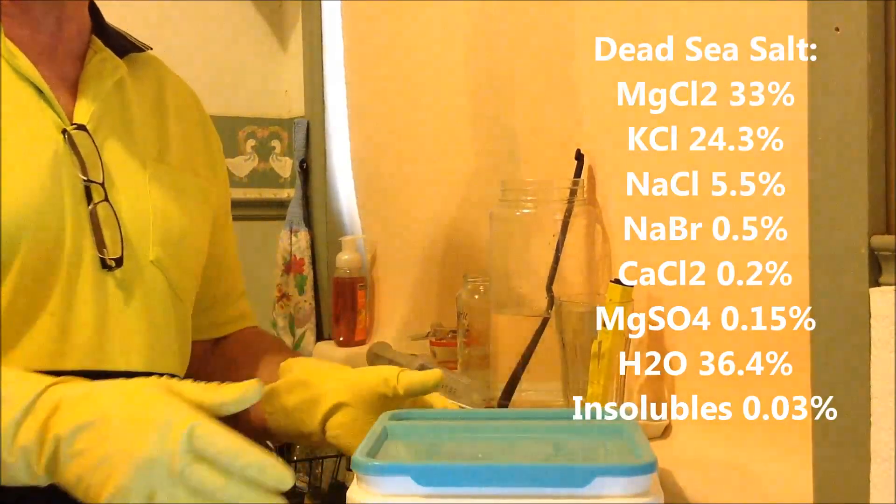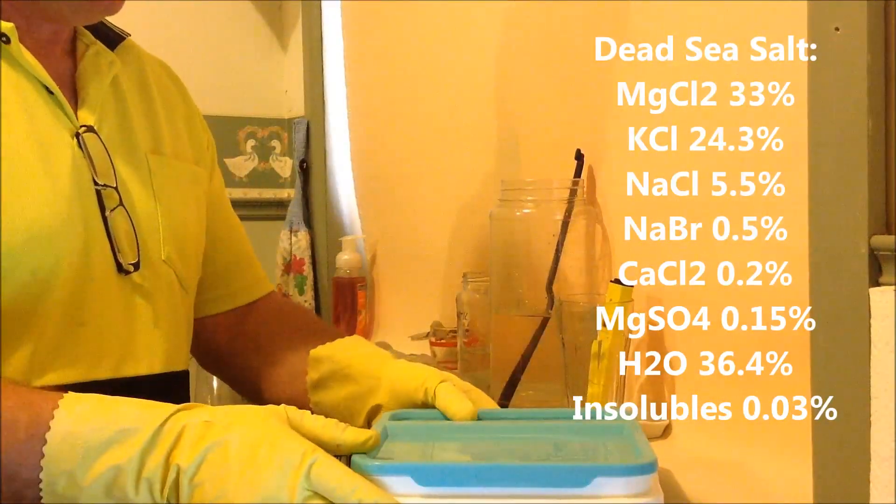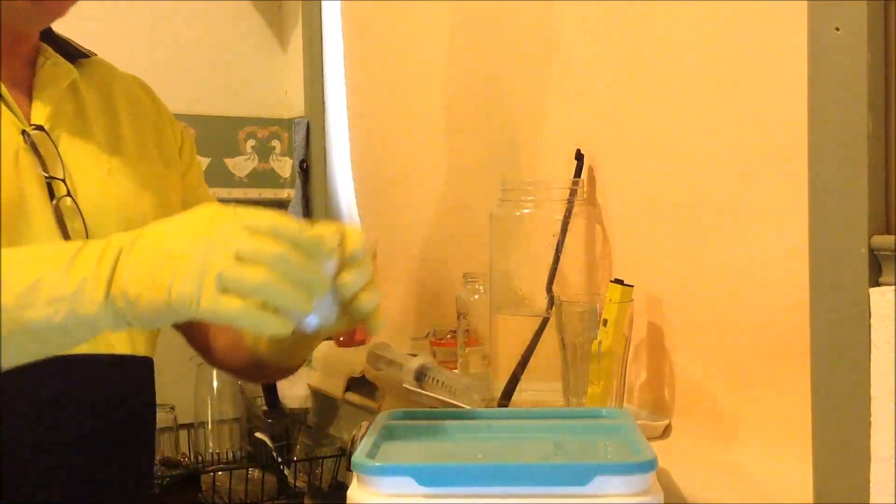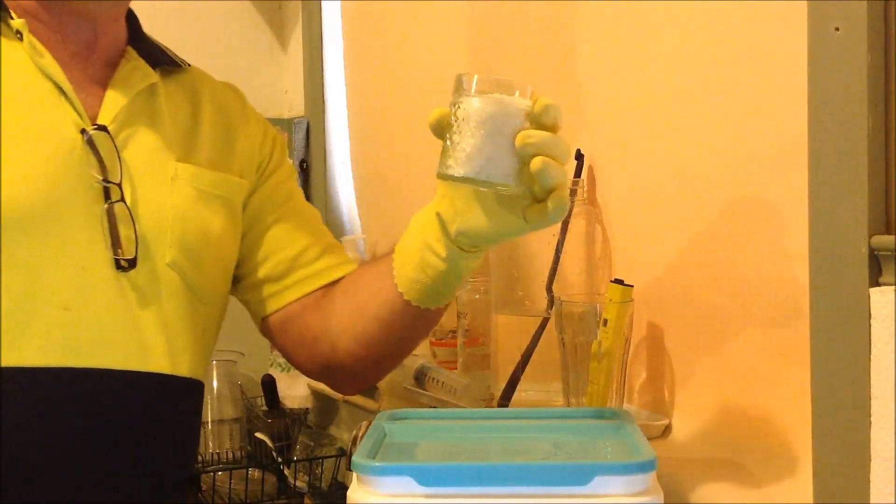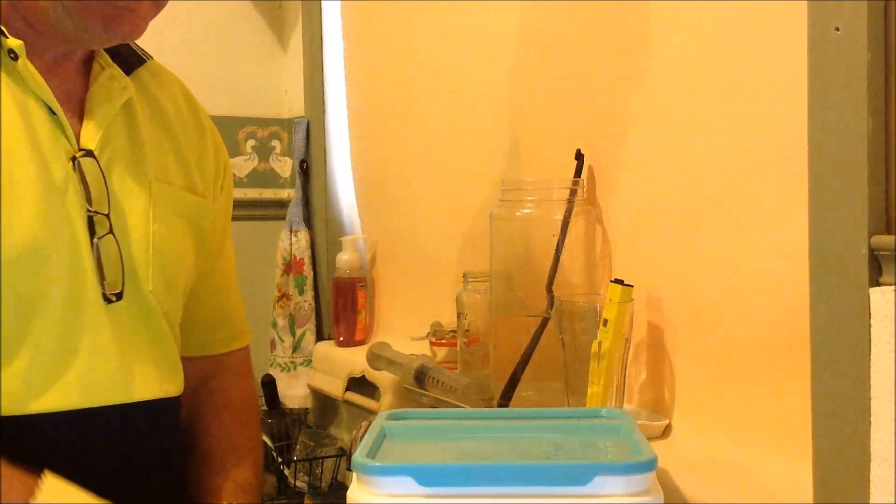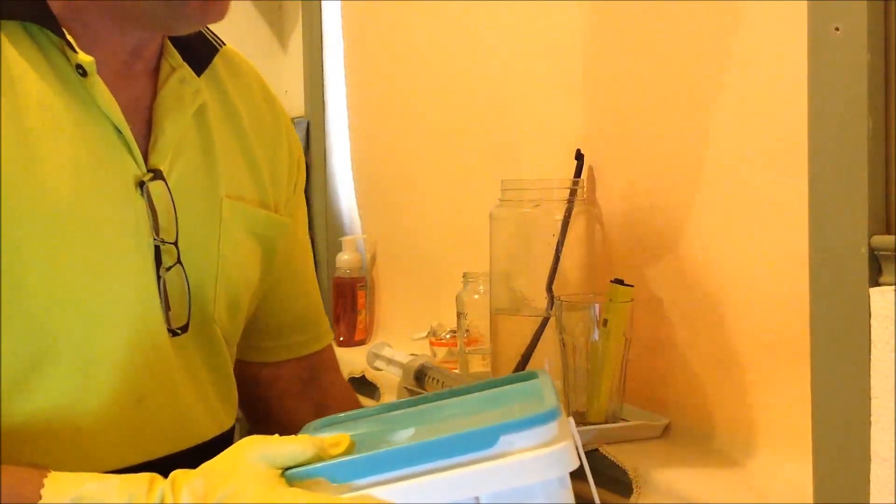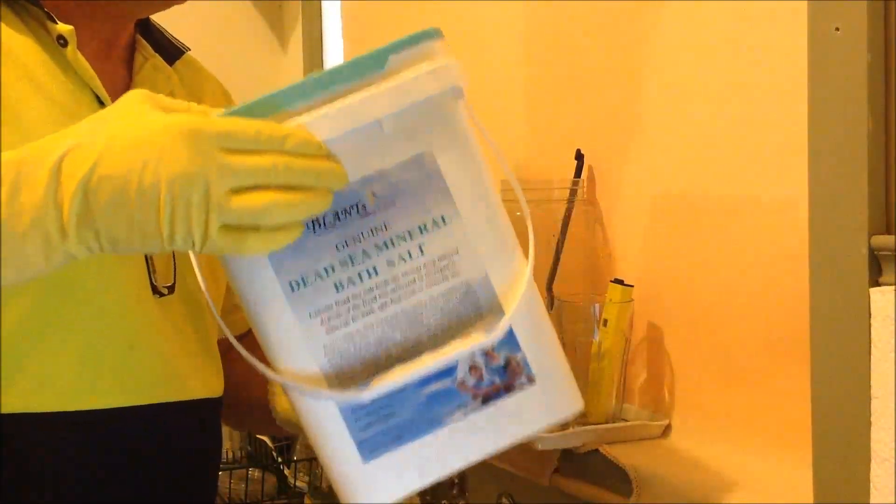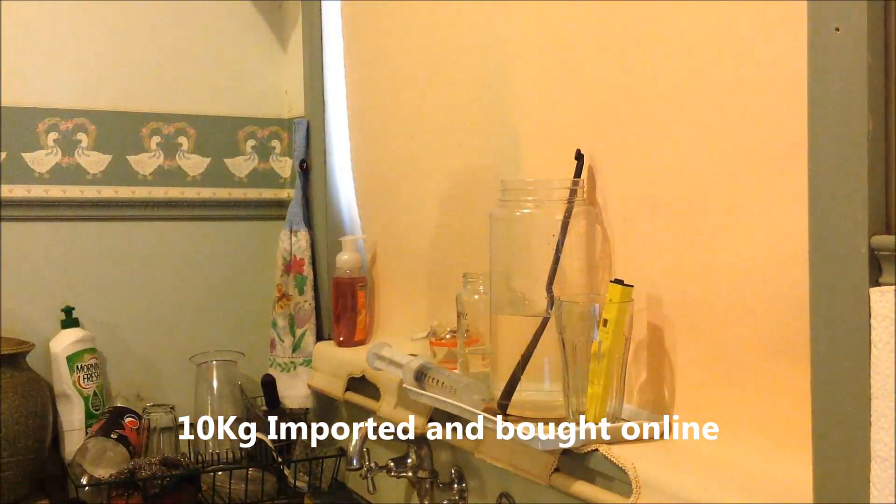So you want to get into ormus production. Well, one of the simplest ones you will do will be Dead Sea salt. Here I have 150 grams measured by weight. You don't have to buy it in big containers like this, but if you get into it you can buy it in these larger containers imported from the internet.